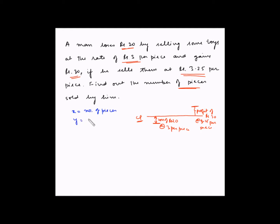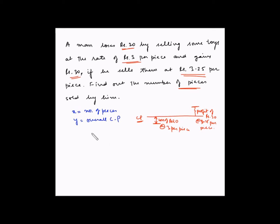So let Y be the overall cost price. The first equation becomes 3 times X is equal to Y minus 20. So 3 times X is the total amount that he is getting by selling each piece at Rs 3 and this is equal to Y, the overall cost price, minus 20 because he is making a loss of Rs 20 on the overall deal. So this is our first equation.